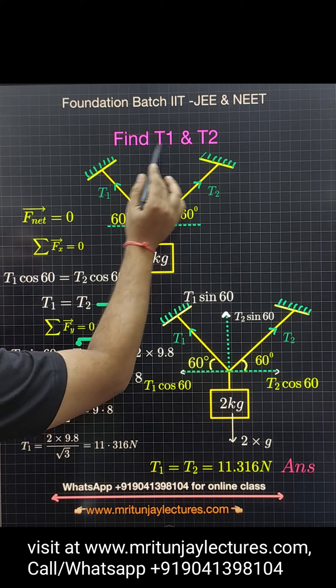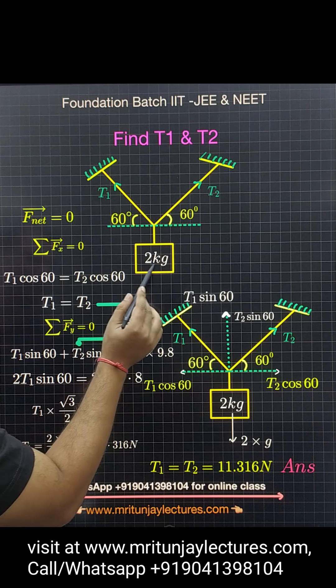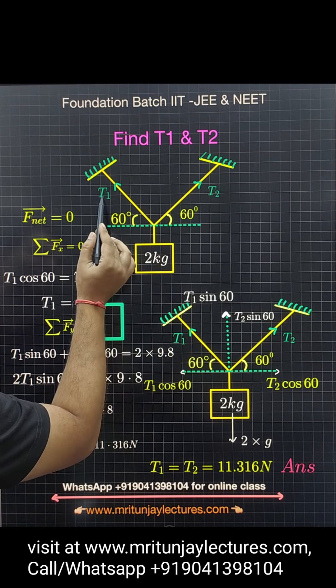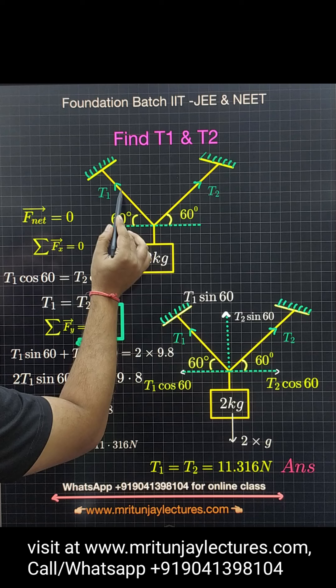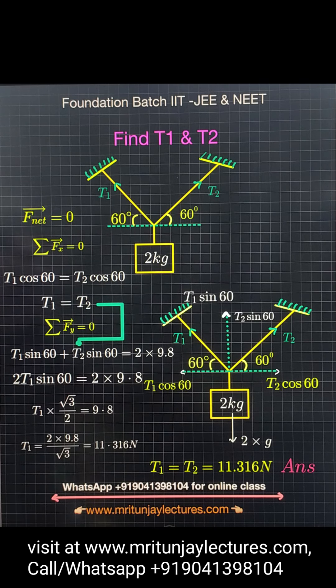Now, question of the day. We need to determine T1 and T2 if the whole system is in equilibrium. We have a 2 kg block with tension T1 generated in this string and T2 in this string.